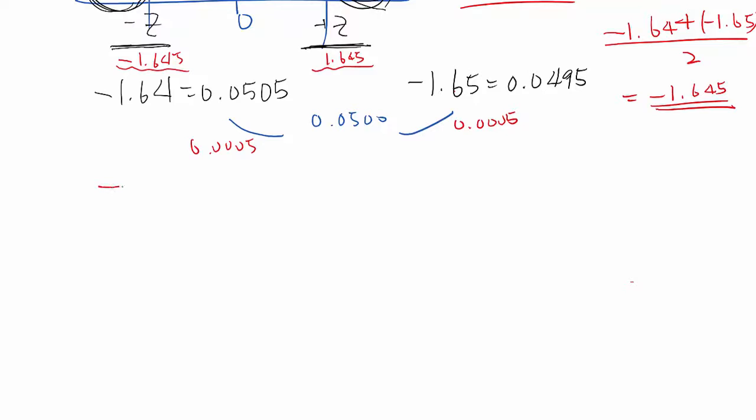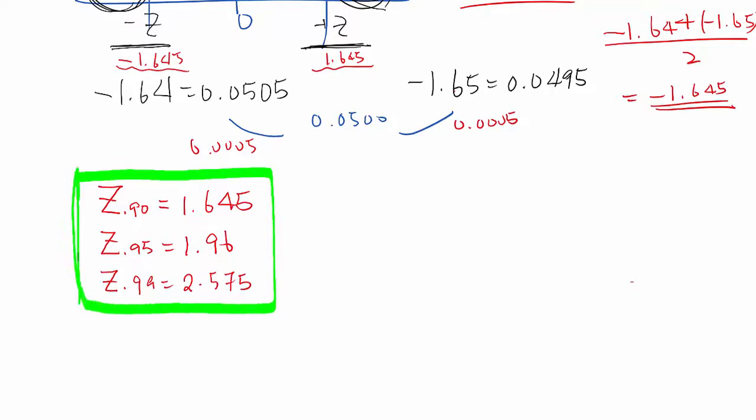If you do the same procedure, then you will get z_0.95 equal to 1.96, z_0.99 equal to 2.575. And these values are consistent for all large samples. Then let's look at one example.